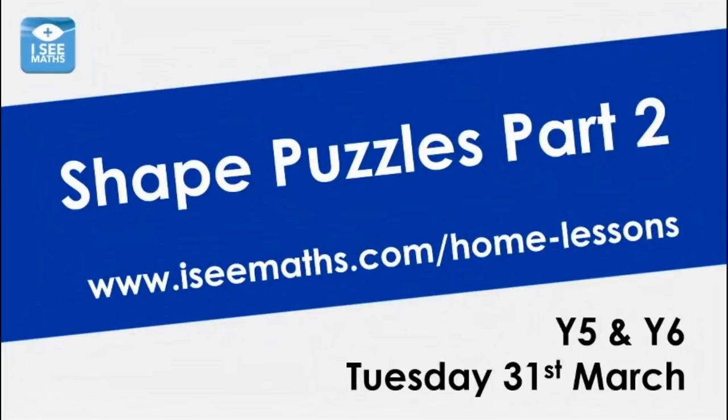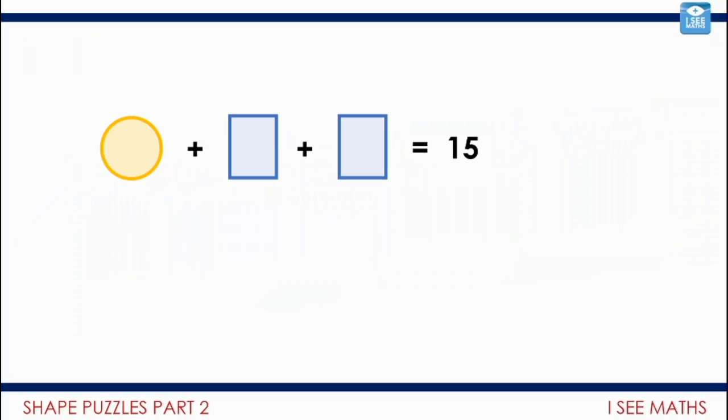Now, let's get going again on those wonderful shape puzzles where each shape represents a different number. So, again, if we look at this example here, a circle plus a rectangle plus a rectangle equals 15. And we know we can't work out yet the value of the circle or the rectangle. There's different possible values.